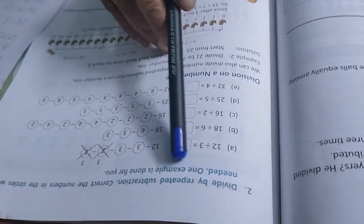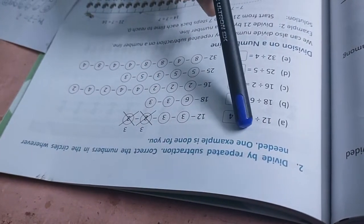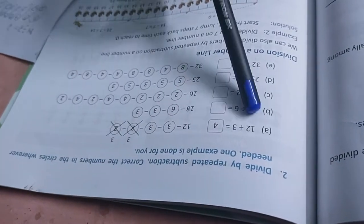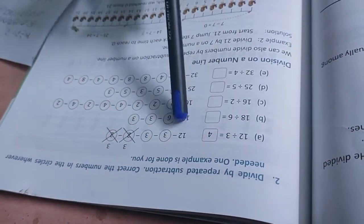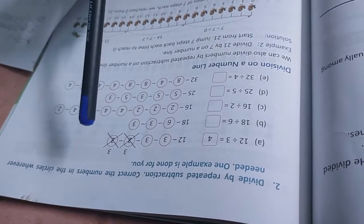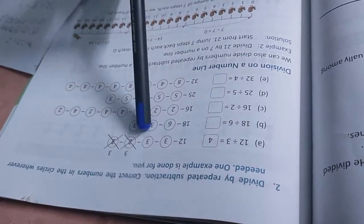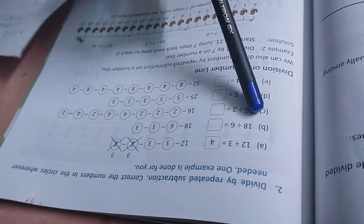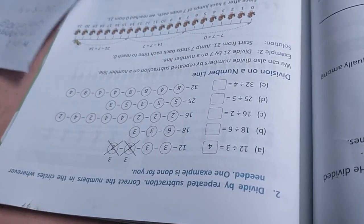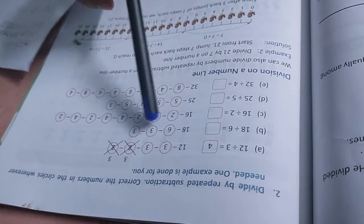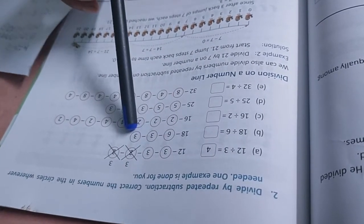And this one, correction. Divide by repeated subtraction. Correct the numbers in the circles wherever needed. One example done for you. 12 divided by 3 is 4. So 3 will come here 4 times, so 2 will not be allowed here. So these 3, these 3 circles, these 2 cross. 6, 6, 3 is 18. 6 will come here 3 times. So this is circle, this cross. 3 will not be here, so these 2 will be crossed.